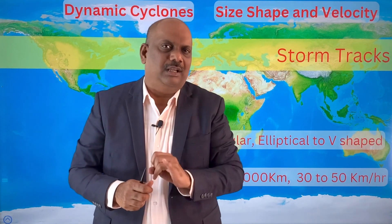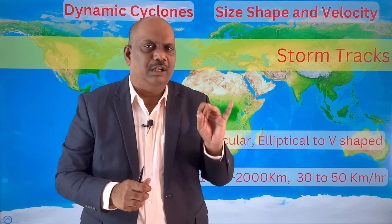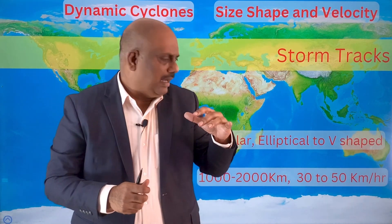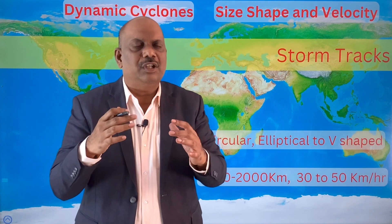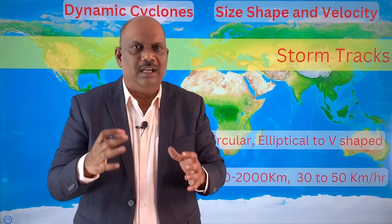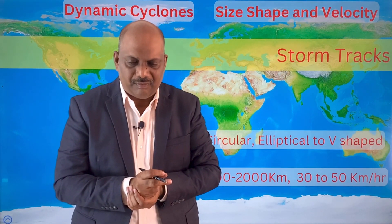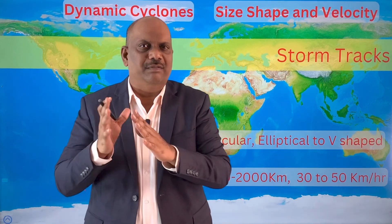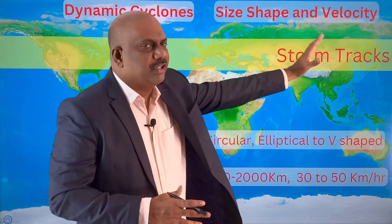Unlike tropical cyclones, temperate cyclones never create stormy or turbulent weather — it is more gentle, moving at an average velocity of around 30 to 50 kilometers per hour. It is the convergence of two contrasting air masses which creates different segments inside a temperate cyclone. Under the influence of westerlies, a temperate cyclone moves from west towards east.